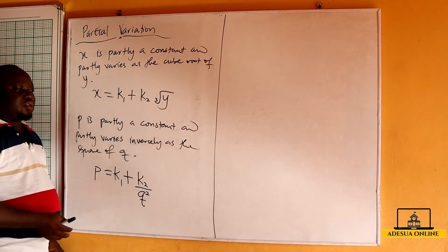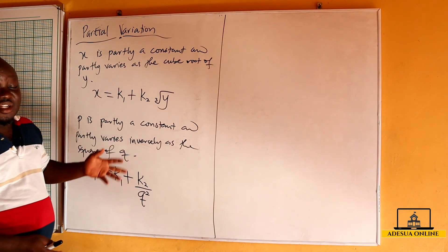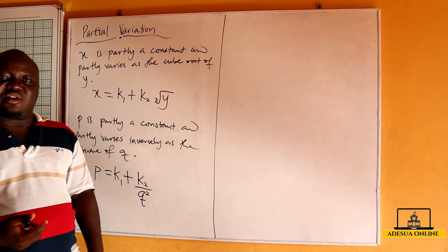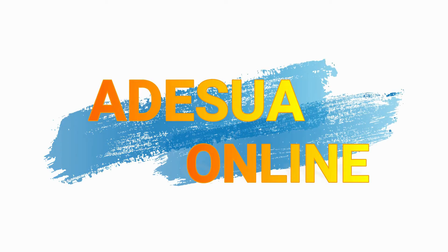So these are the various types of examples you can get under partial variation. Now let's stop, the question is.